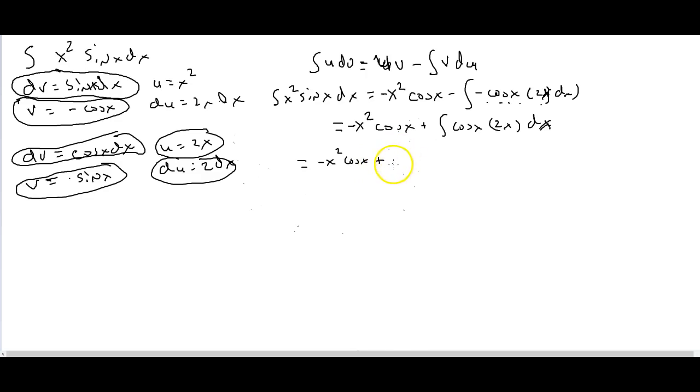So this left hand side right here is still equal to negative x squared cosine x plus, now I'm going to go ahead and go again. uv, so u is equal to 2x, v is equal to sine x, minus the integral of vdu: sine x, 2 dx.